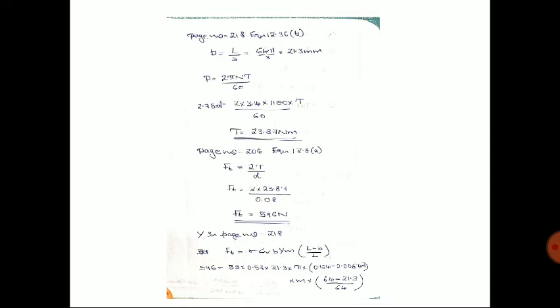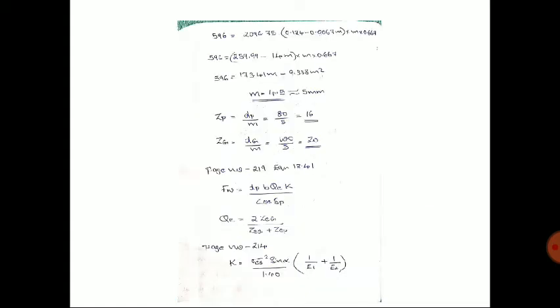Substituting all terms into the Lewis equation, we get an equation in terms of m²: 596 = 173.41·m − 9.338·m². Solving this, module m = 4.5, which is approximated to the standard value of m = 5 mm. Upon obtaining the module, we can find the number of teeth on the pinion and gear. This completes the static strength design.